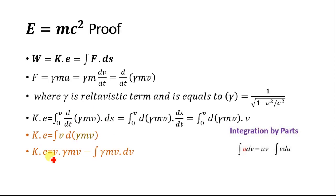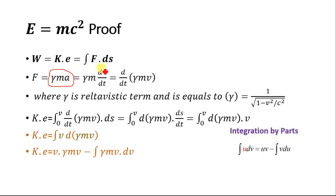Now we use the second method, which is the mathematical method. In this method we begin from the kinetic energy, which is equal to the work done or the work integral of F dot ds. Now in relativity, the force F is equal to gamma ma, where gamma is the relativistic term. The acceleration is equal to dv divided by dt. So we can write this equation as d by dt into gamma mv, where gamma is the relativistic term and is equal to 1 over the square root of 1 minus v square by c square.